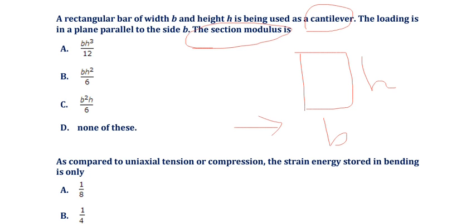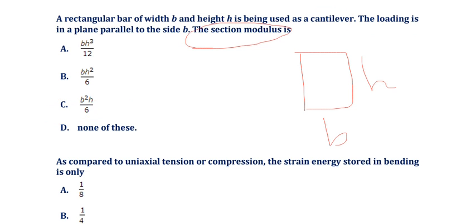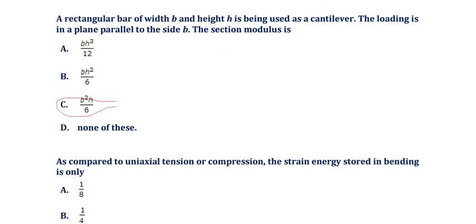So the section modulus of a rectangular bar in this case is B squared H divided by 6. This is the correct answer. Please remember: if the loading is in a plane parallel to the side B, the section modulus is B squared H divided by 6. But if the loading is in a plane parallel to the side H, the section modulus answer is still B squared H divided by 6 in that variant.